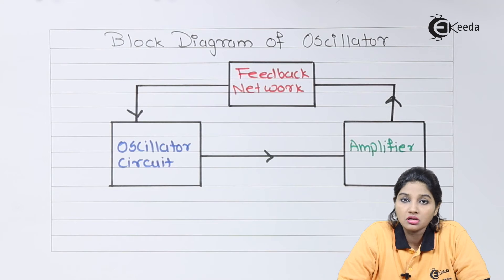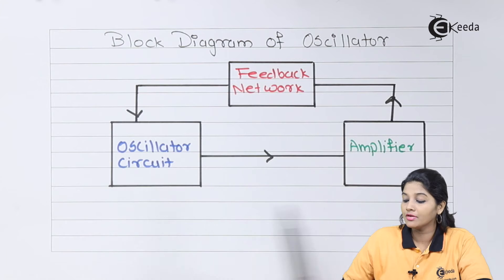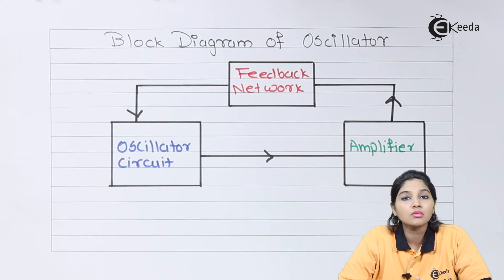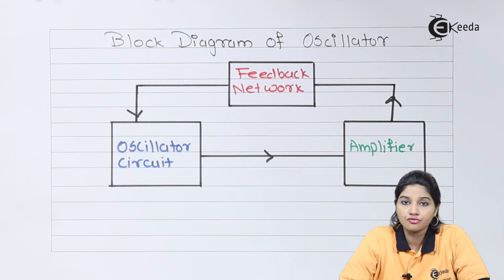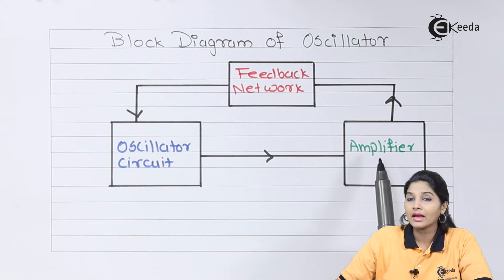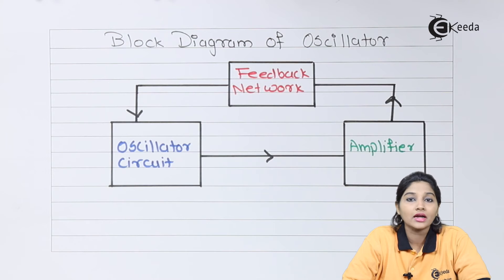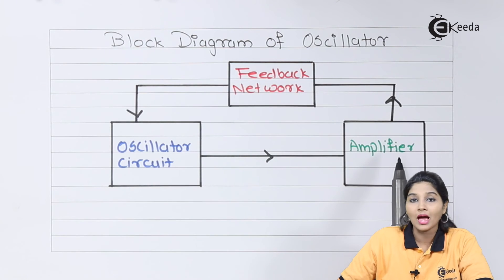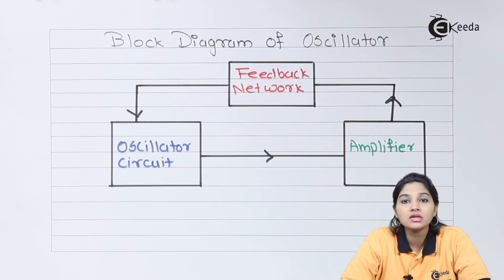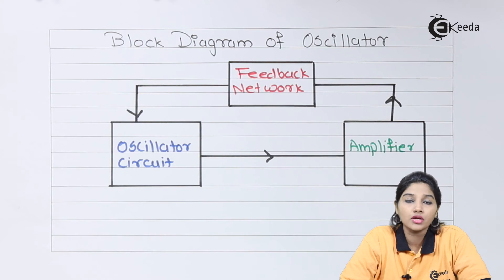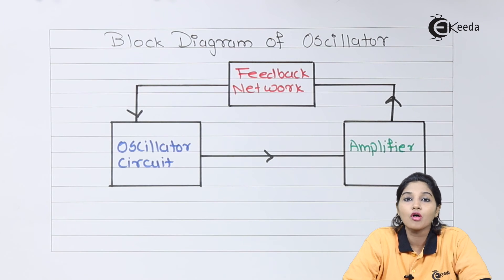Now let's see the block diagram of an oscillator. An oscillator does not have any input signal, and it basically consists of three elements: a feedback network, an amplifier, and an oscillator circuit. An oscillator is nothing but a feedback amplifier with positive feedback. For generating oscillations we require an oscillator circuit which may consist of active or passive elements. These oscillations are the output, which is fed back to the amplifier through the feedback network. The amplifier amplifies it and sends it back as output to the feedback network. The feedback network has a gain of beta and the amplifier has a gain of A.